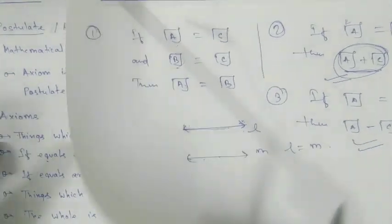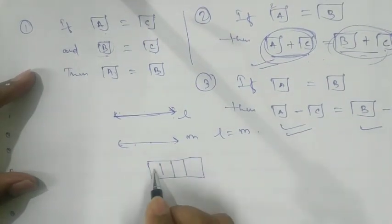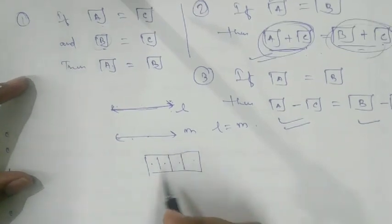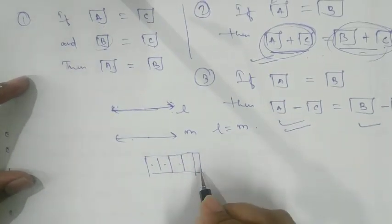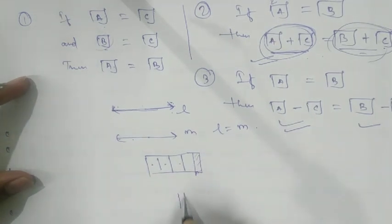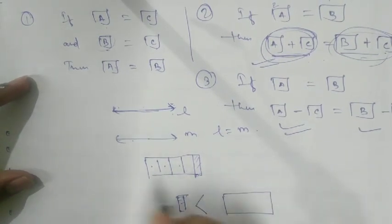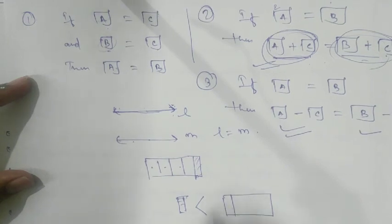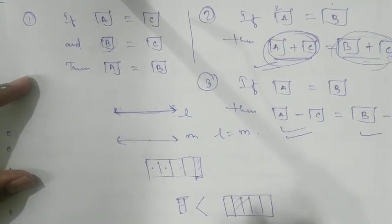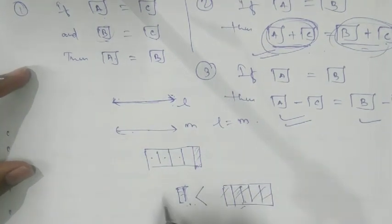Axiom 5: The whole is greater than the part. If we take a cake and break it into parts, whatever part you take — remember the whole thing is always greater than its part. That is what this axiom says.